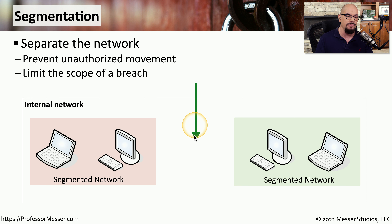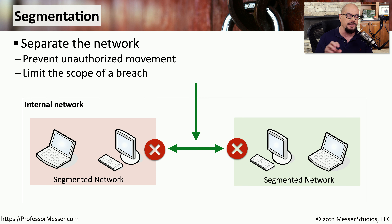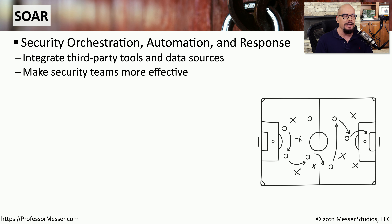In those cases, someone coming in from the outside might gain access to the internal network, but because all of these devices are on their own segmented network, there would be no way to communicate in or out of those protected areas. There are a number of different security controls you can put in place to allow or disallow access for applications and data through the network.